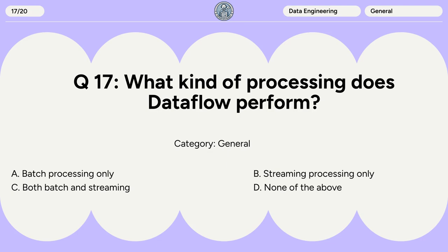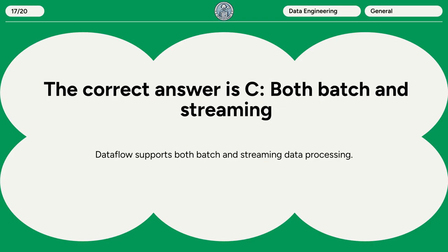Question 17: What kind of processing does Dataflow perform? A. Batch processing only. B. Streaming processing only. C. Both batch and streaming. D. None of the above. The correct answer is C. Both batch and streaming. Dataflow supports both batch and streaming data processing.